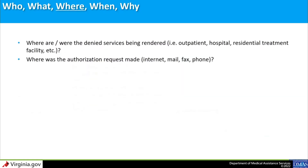'Where' asks where the denied services were rendered — this affects the authority that applies to the appeal. Locations can include outpatient treatment facilities, a hospital, or a residential treatment facility. Additionally, where was the authorization request made? Was it submitted to the PRSS portal, via mail, via fax, or via phone?